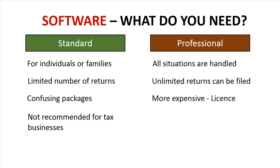As you might imagine, professional software is much more expensive than the standard packages at your local store. Typically you get an annual license, which you renew every year, and the company allows you to download all current forms and the full software functionality. Most importantly, you'll also have access to a library of past tax returns, which matters because you'll come across people who haven't filed in a while and need, for example, their 2012 return prepared even while you're working on their 2016 return.